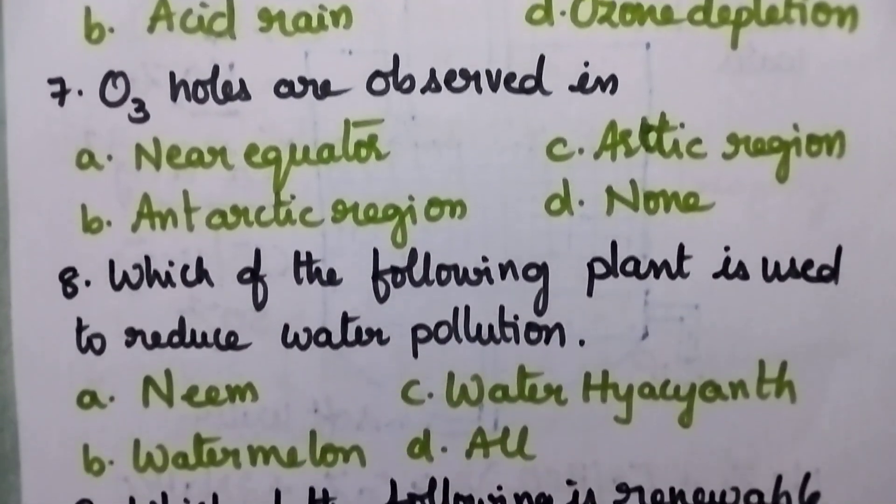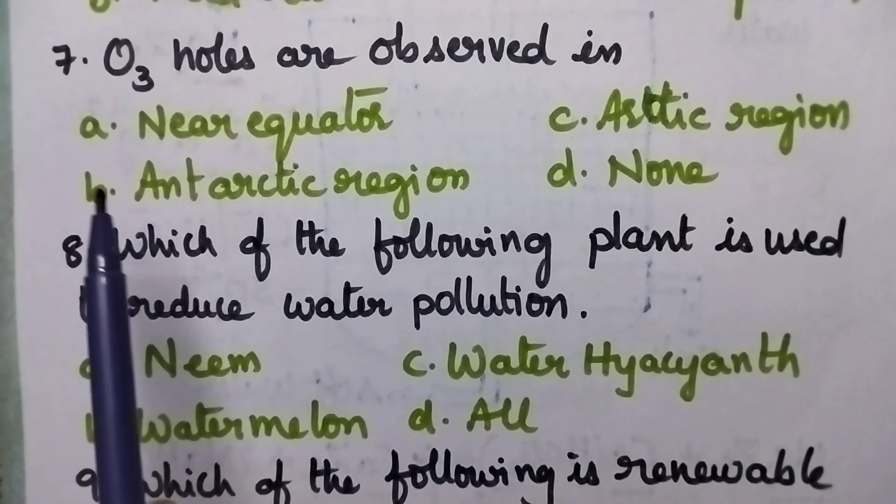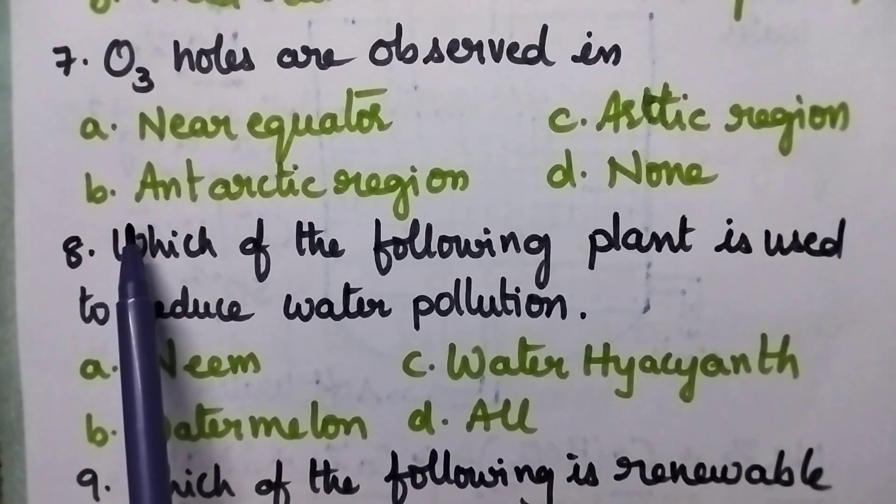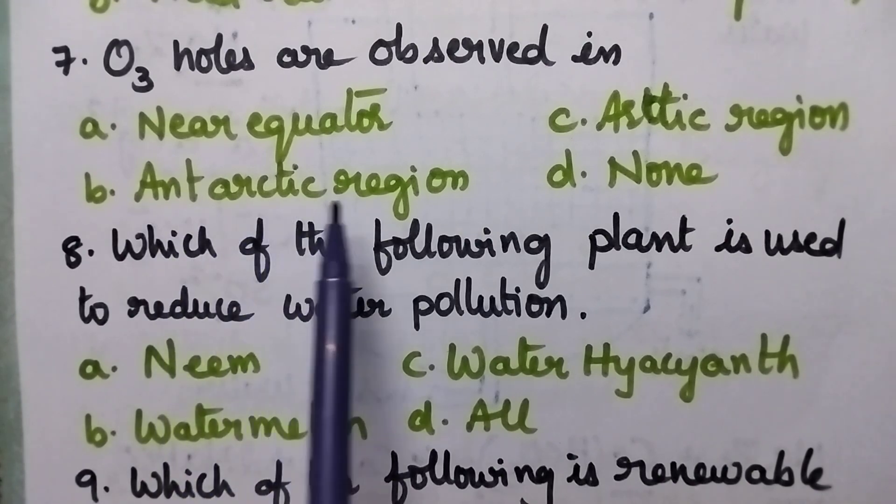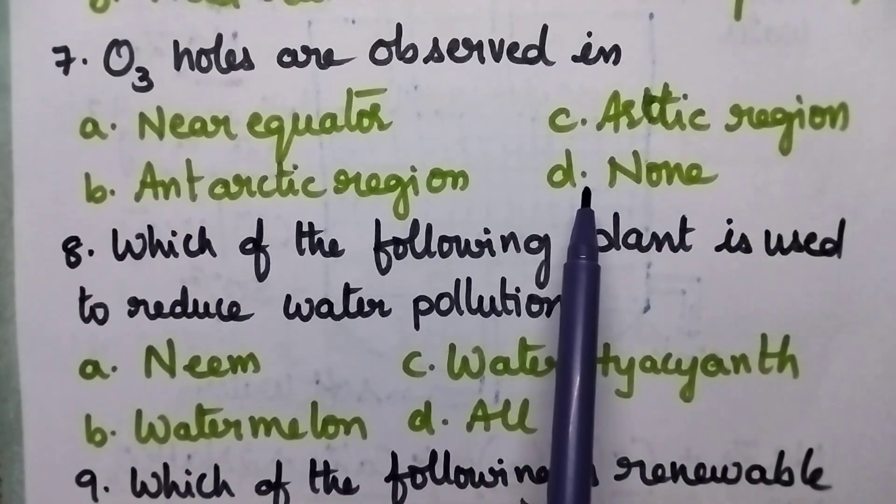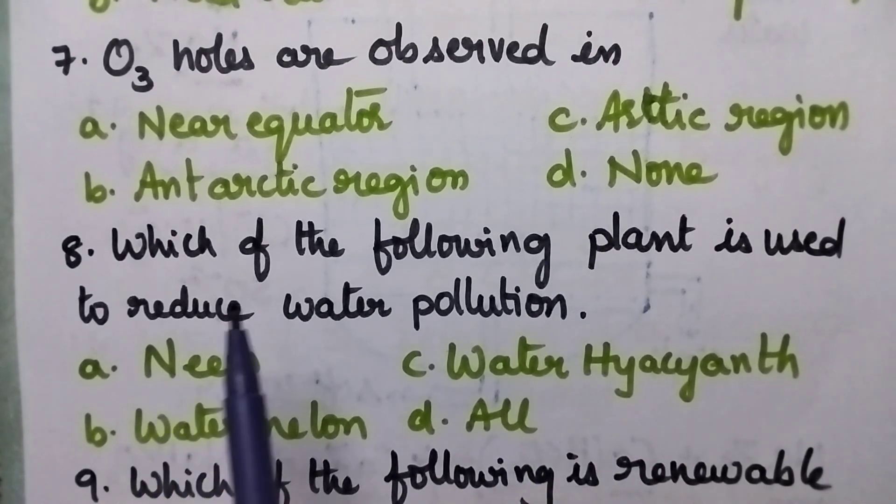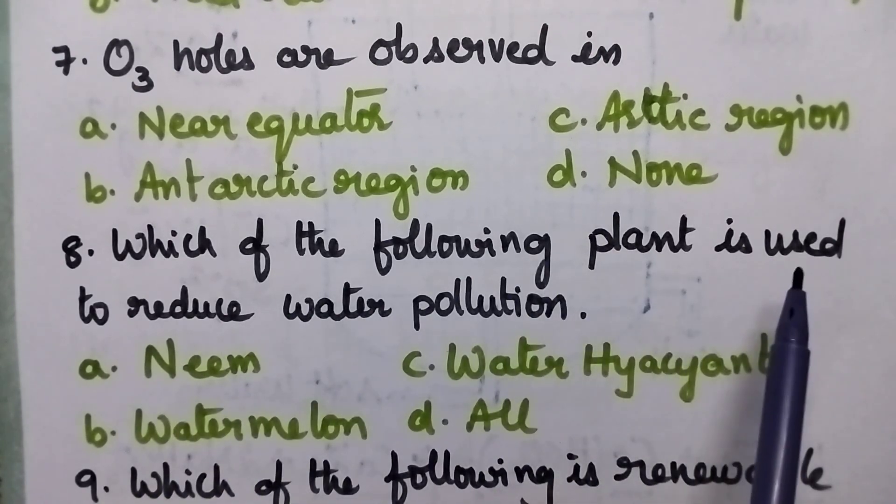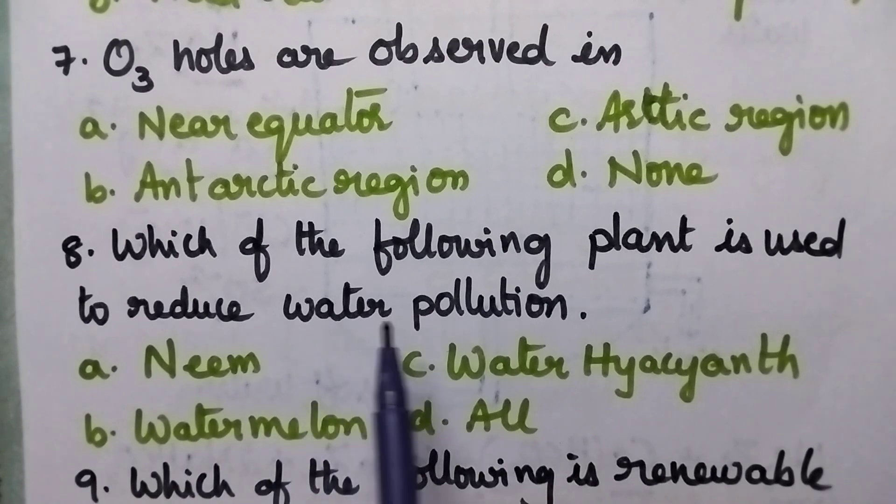Ozone holes are observed in Option A: Near equator, Option B: Antarctic region, Option C: Arctic region, Option D: None. Which of the following plant is used to reduce water pollution?